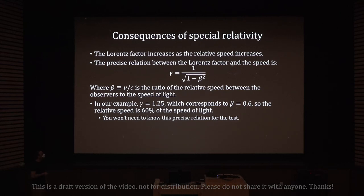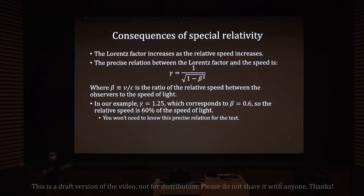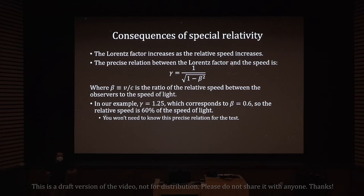All you need to know is that the Lorentz factor increases — the faster the relative speed between the two observers, the more significant the time dilation will be. If the speed is very slow, the time dilation factor will be extremely small. If you move at 10 kilometers per hour, gamma is going to be something like 1.00000000001, and you will never notice that effect in real life. But if you move at relativistic speeds, then gamma will be noticeably different from 1.